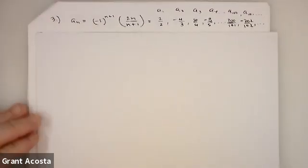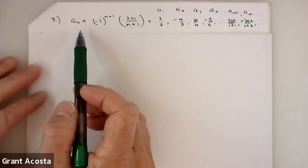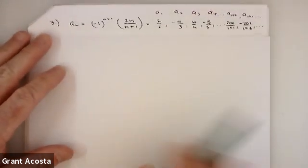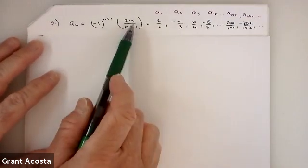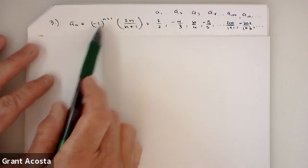Okay, let's look at another example. Maybe I'll do this this time. Okay, so now my formula, notice it looks pretty much the same as the first example where I had 2n over n plus 1, but now I have this negative 1 to the n plus 1 term.